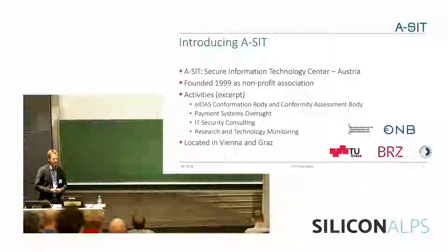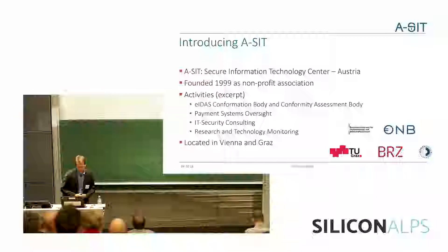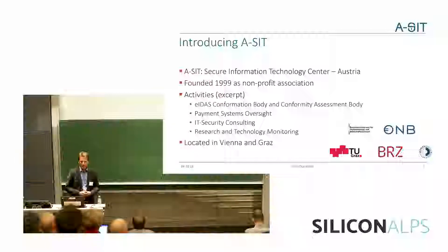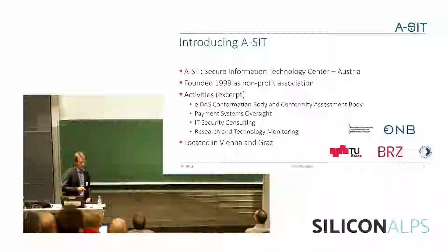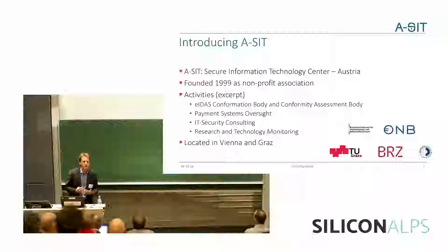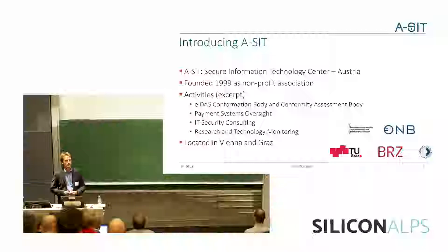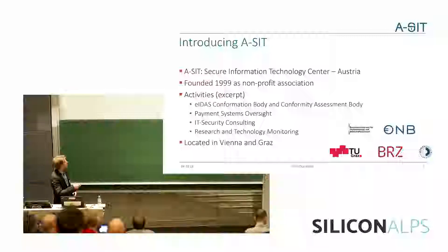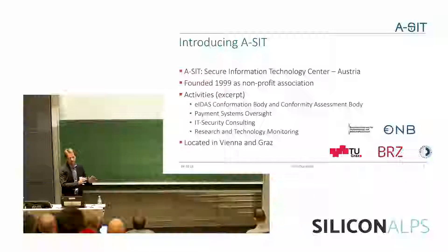This is ASITS — not quite obvious, but ASITS stands for Secure Information Technology Center Austria. We have been founded in 1999 as a non-profit association, and basically we still are. You can see our members here by their logos, so you can see we have a very strong root in the Austrian public sector. Members include the Federal Ministry of Digital and Economic Affairs, the Austrian National Bank, and a few others including the University of Technology here in Graz. We have two sites, in Vienna and in Graz.